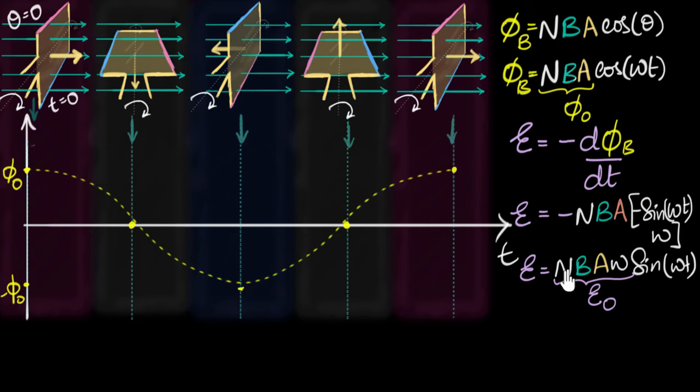So now we know what the induced EMF depends on. It depends upon the number of turns, the strength of the field, the area of the coil, and how quickly you're spinning it. The quicker you spin, the more quickly the flux changes and higher is the induced EMF. Now let's go ahead and plot this.